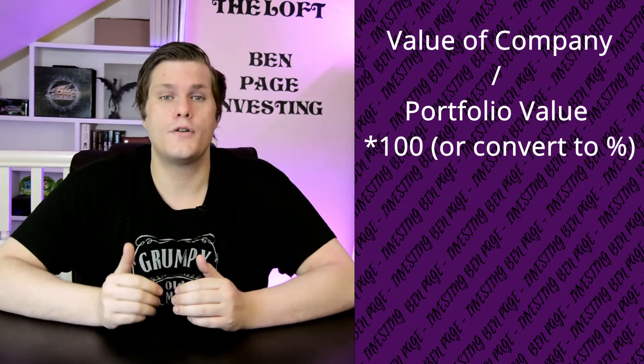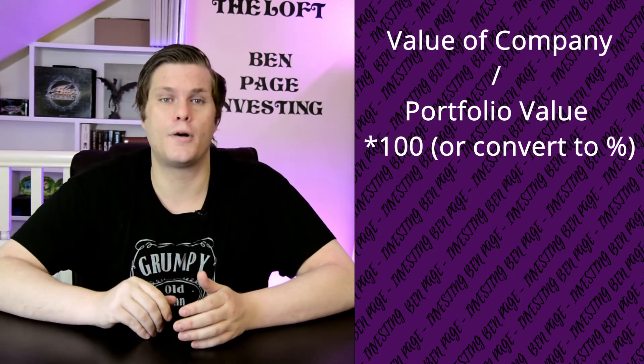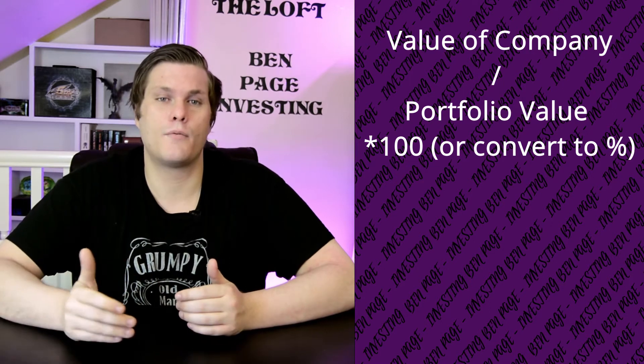Then we can move over to the second piece of information, which is the percentage that the company takes up within the portfolio. Now this can sometimes be exported from your broker or a similar system, or if you track all of your buys and sales on a spreadsheet within Google Sheets or Microsoft you would be able to potentially export this out as a pivot as I have here. Though you can also just manually work it out and I would suggest working it out by the percentage they take up within value.